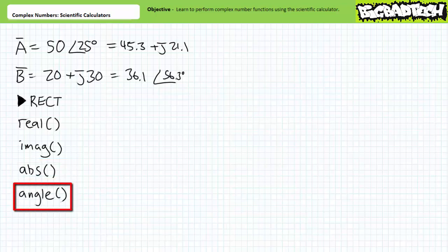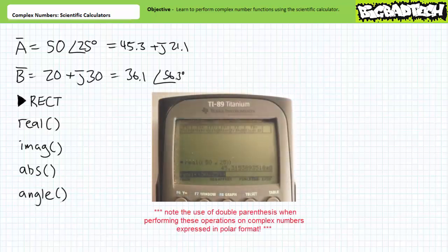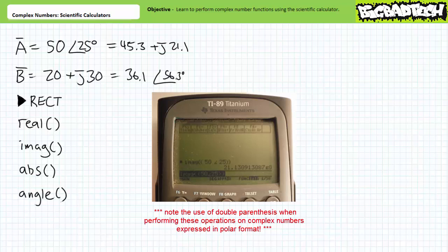If we want just the real component of complex number A, I choose real from the catalog entry and close complex number A inside parentheses — in whatever format I want, rectangular or polar — and press enter. The calculator returns 45.3 as we'd expect. If we want just the imaginary vertical Y component of complex number A, I choose imaginary from the catalog entry and close complex number A inside parentheses, press enter. The calculator returns 21.1 as we'd expect.